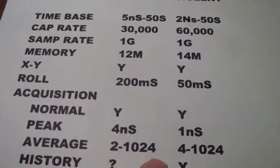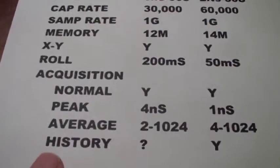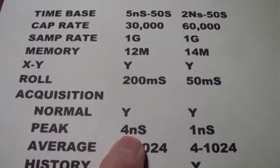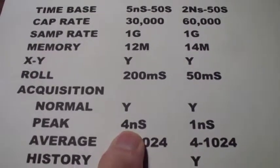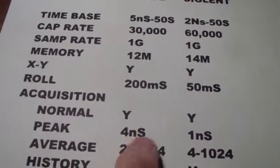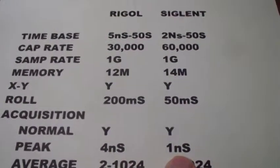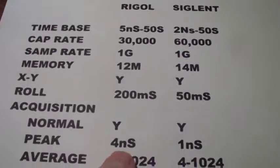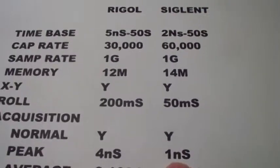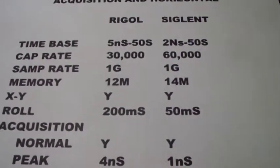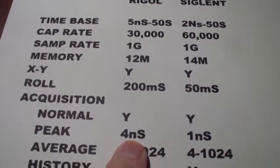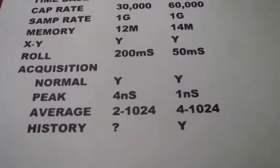The reason peak detection matters is if you're looking for a narrow signal. The Siglent has about a four-to-one advantage over the Rigol — they claim they can peak detect at 1 nanosecond whereas the Rigol can only do 4 nanoseconds.